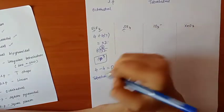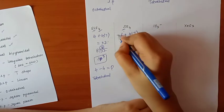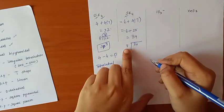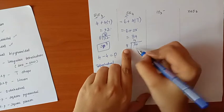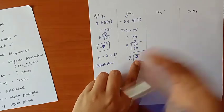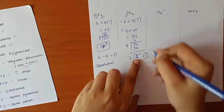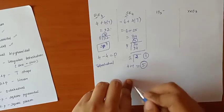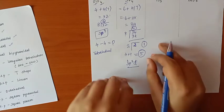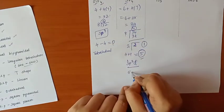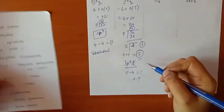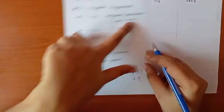SF4: sulfur is 6, plus 4 times fluorine (7) = 28, total = 34. Dividing 34 by 8: 4 times 8 = 32, remainder 2, so we round up to 5. That means SP3D hybridization. Lone pairs = 5 minus 4 surrounding atoms = 1. SP3D with 1 lone pair is seesaw shape.